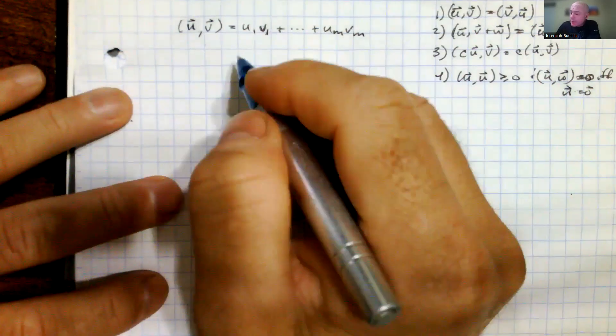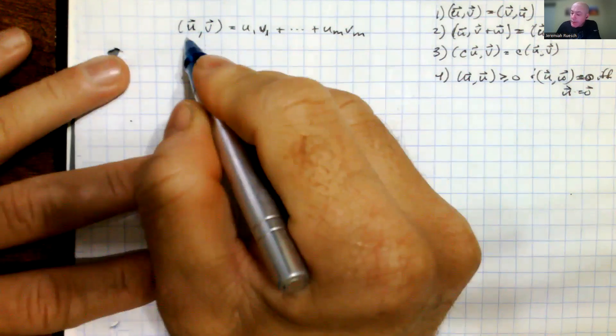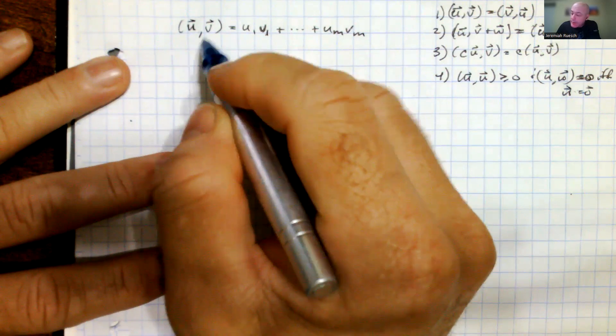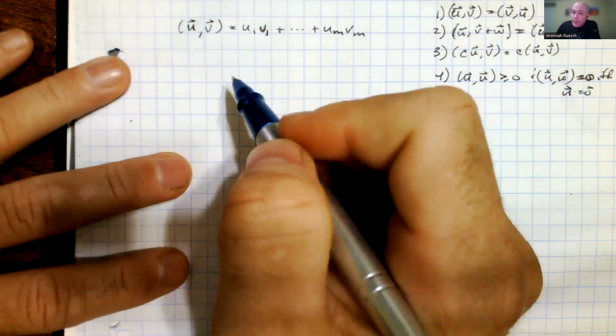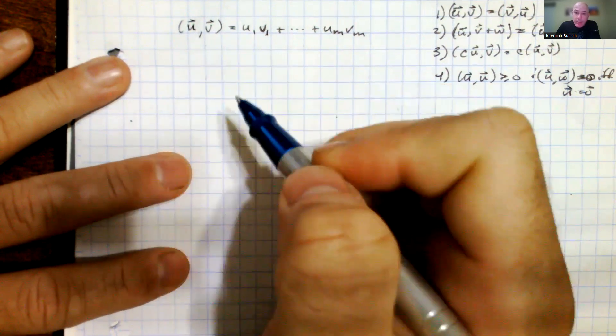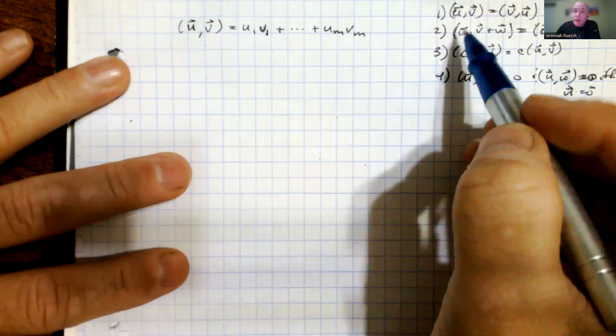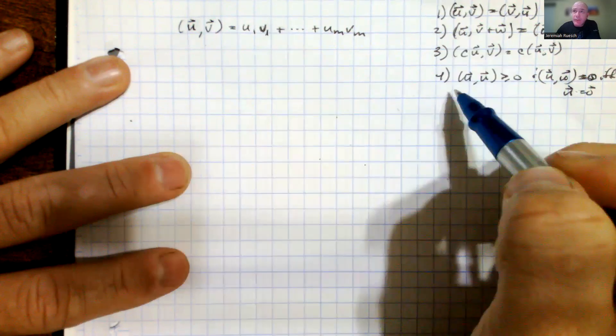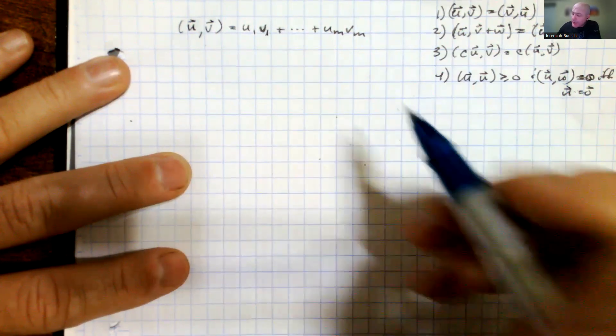All right, so we're going to prove that a vector with this norm, or this inner product, sorry, is an inner product space, which means that we need to show that this inner product satisfies each of these four components.